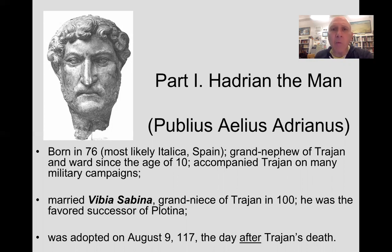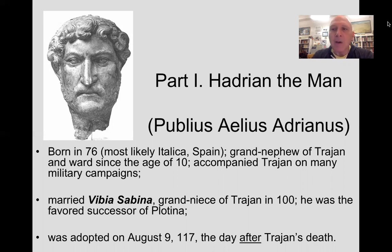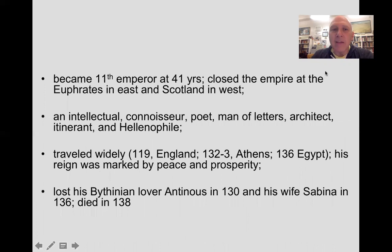In the year 117, on August 9th of 117 — the day after Trajan's death — he was adopted by Trajan, so he became his heir. He was the 11th emperor, 41 years old when he assumed the throne.